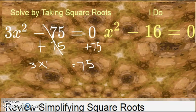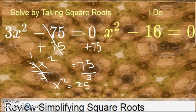We want to get x by itself, so we divide by that 3 so it will not be there. 3 divided by 3 is 1, so 1x squared equals 25. To get rid of a square, we take the square root. The square root of x squared is just x, and the square root of 25 plus or minus 5.